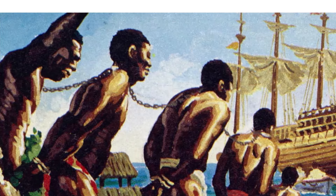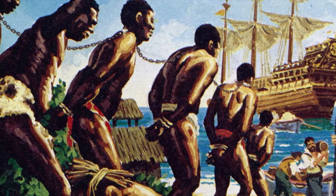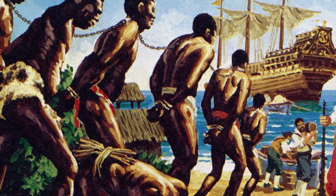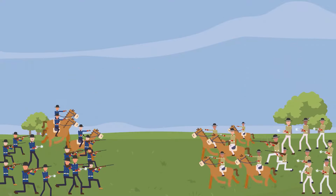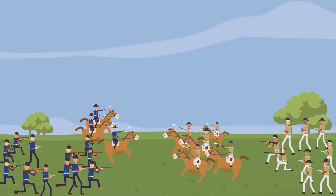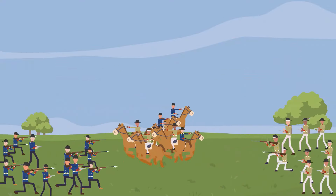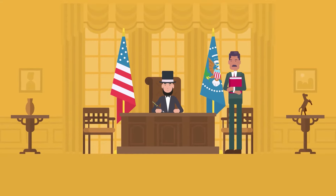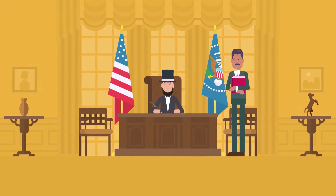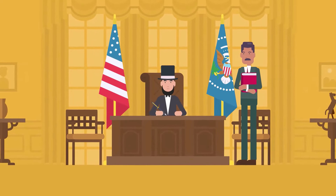The Civil War began primarily as a result of the long-standing controversy over the enslavement of black people. War broke out in April 1861 when secessionist forces attacked Fort Sumter in South Carolina, just over a month after Abraham Lincoln had been inaugurated as the President of the United States.